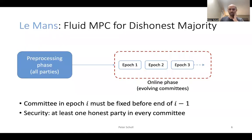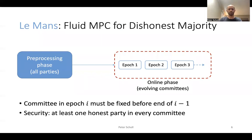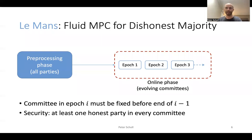In our work, we extend this to the dishonest majority setting. One challenge is that most practical dishonest majority protocols for MPC rely on a preprocessing phase — a more expensive phase used to generate correlated randomness done ahead of time and independently of the inputs of the computation. To model this in Le Mans, we allow all of the parties to be online in the preprocessing phase, and then move to the online phase where the computation is divided into epochs with changing committees. For security, we only require that there is at least one honest party in each committee within any epoch.